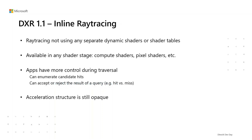The first addition to DXR is inline ray tracing. Inline ray tracing is an alternative form of ray tracing that doesn't use any separate dynamic shaders or shader tables. It is available in any shader stage, including compute shaders, pixel shaders, and so on. Inline ray tracing gives apps more control during traversal, such as enumerating candidate hits and accepting or rejecting the result of a query.